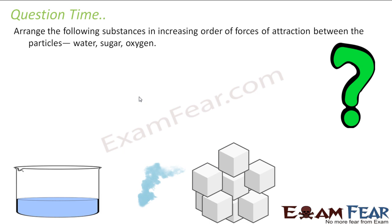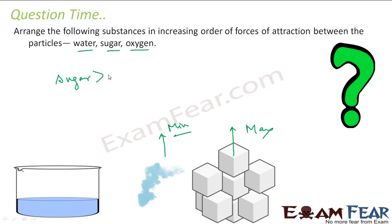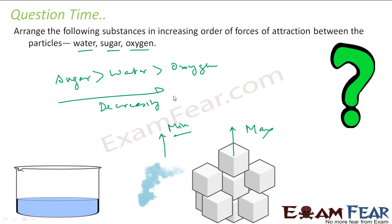Arrange the following substances in order of attraction between particles: water (liquid), sugar (solid), and oxygen (gas). Solid has the strongest force of attraction — maximum. Gas has the minimum force of attraction, and liquid is somewhere in between. So in decreasing order it is sugar, then water, then oxygen. Since the question asks for increasing order, you flip it: oxygen, water, and sugar.